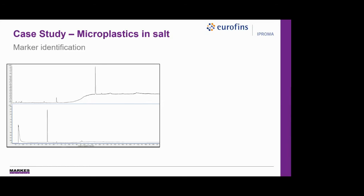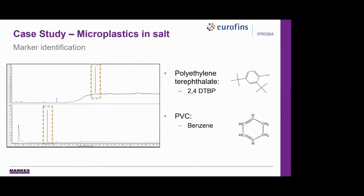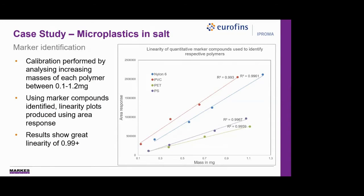For polyethylene terephthalate, Eurofins Oproma determined 2,4-di-tert-butylphenol as the marker compound, the same as with application note 150. For PVC, benzene was identified as the marker compound, where the polymer breaks down and reforms the stable aromatic structure during analysis. After this marker identification process, further testing was performed to determine if these compounds were linear and could be used for quantitative results. Calibrations of each polymer were performed by weighing increasing masses into sample tubes, with a range of 0.1 to 1.2 milligrams. All compounds showed an R-squared value of greater than 0.993, proving the marker compounds are linear and can be used for quantitative analysis.